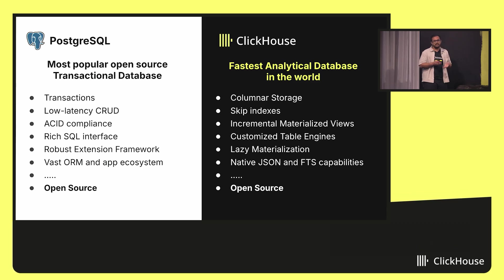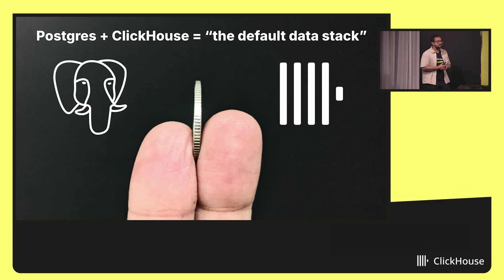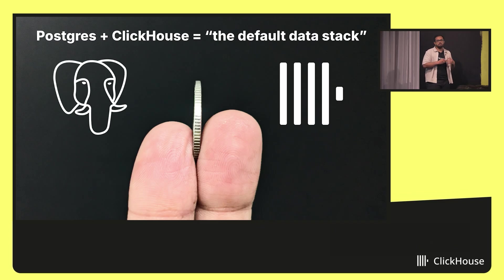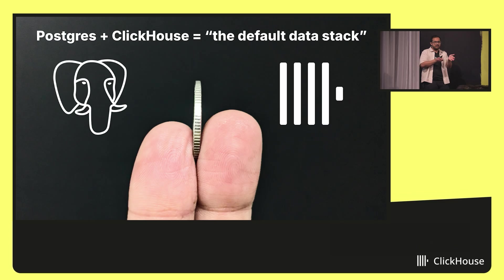Both Postgres and ClickHouse evolve from the same ethos of open source and have large developer communities around them. In the same spirit, over the past few years, a common pattern has been emerging. Businesses are using Postgres and ClickHouse together to solve most of their data challenges — forming the default data stack. Postgres helps build web and transactional applications and represents the system of record, whereas ClickHouse helps solve analytics and reporting challenges and represents the system of analysis. I see Postgres and ClickHouse as two sides of the same data coin.